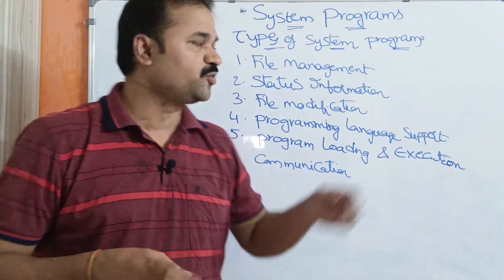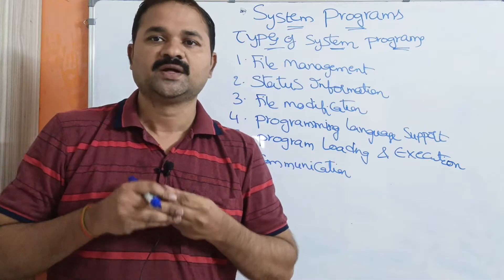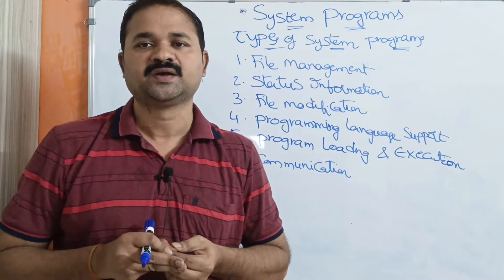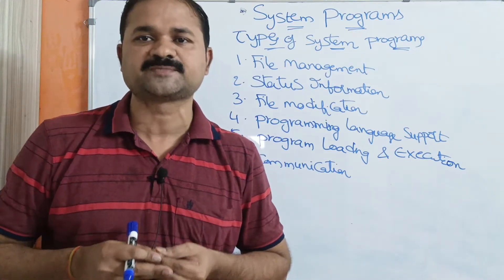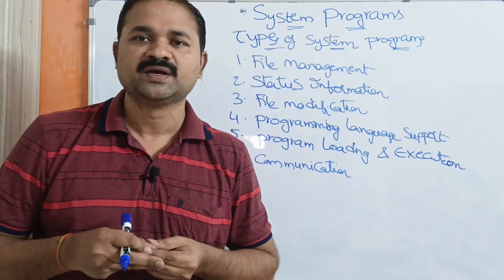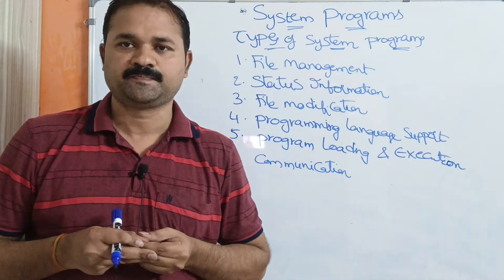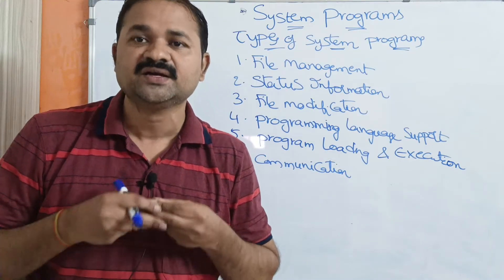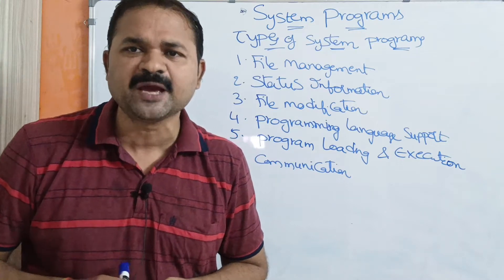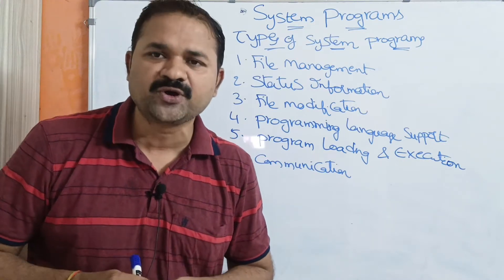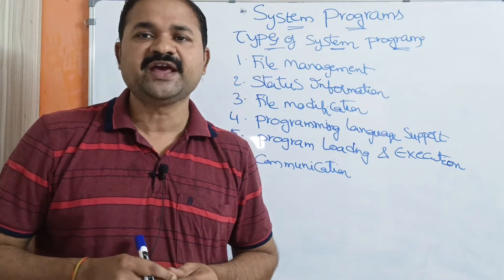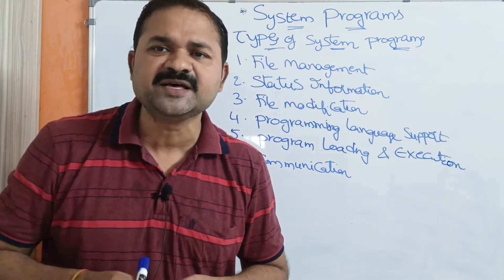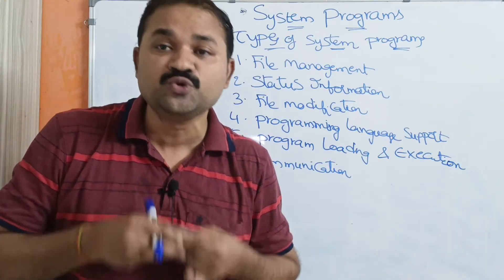Let us discuss about system programs. A modern computer consists of a lot of system programs. We have two types of programs: first is application program, and second is system program. An application program is the program which is developed by the user, so if we develop a program then it is called an application program. A system program — the name itself specifies the meaning — is developed in order to use the system, that is the computer, in an effective manner.